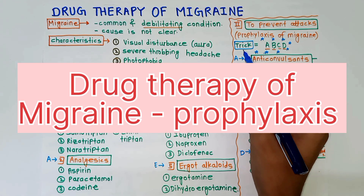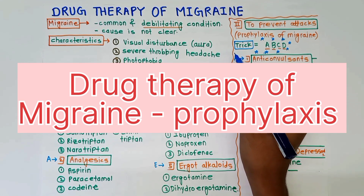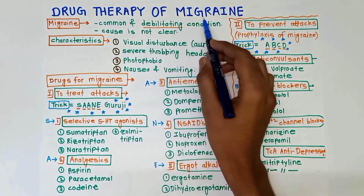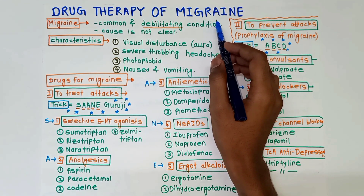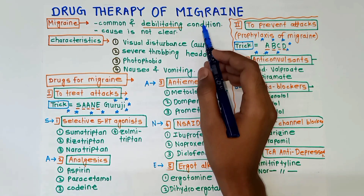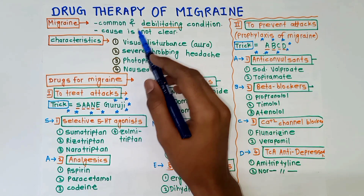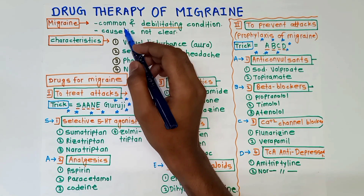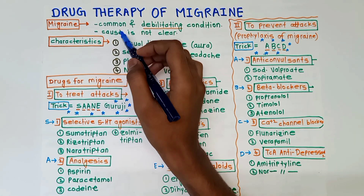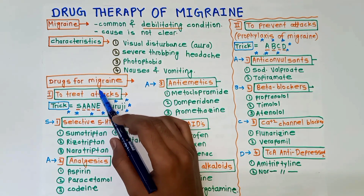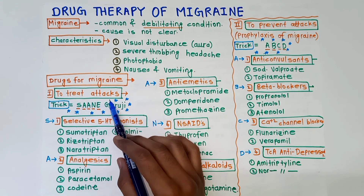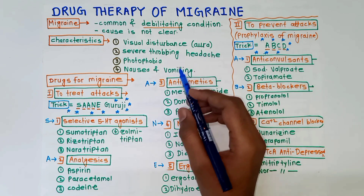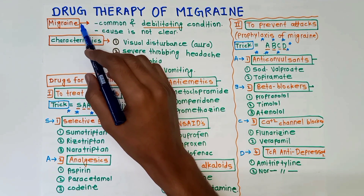Hello guys, welcome to my channel. I am Sudarshan, a third year MBBS student. Today's topic is drug therapy of migraine. The important exam questions regarding migraine include: the definition of migraine, its common characteristics, drugs to treat attacks, and drugs to prevent attacks, that is, prophylaxis of migraine. We will go through each one by one.